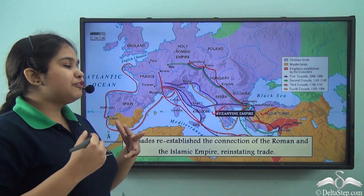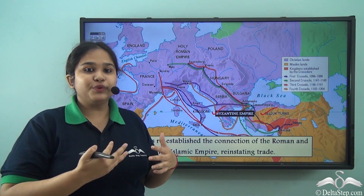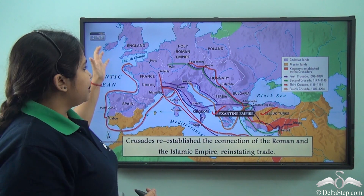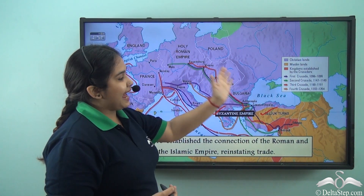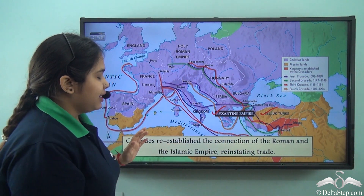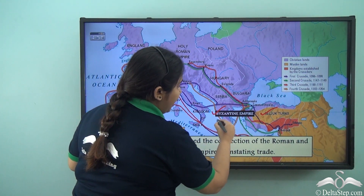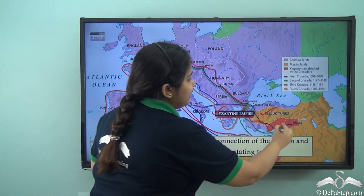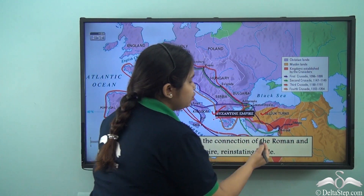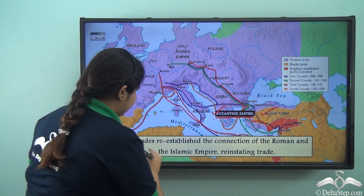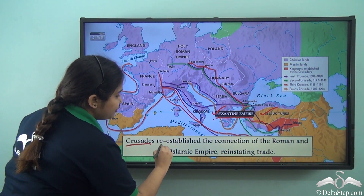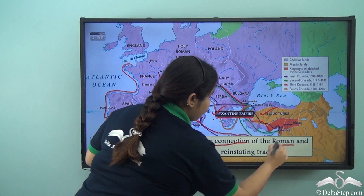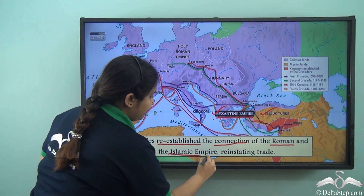After the fall of the Roman Empire around the 4th century, the Western part of the Roman Empire could not gain access to Asian lands for trade, whereas the Eastern part — which included the Byzantine Empire — had easy access, but slowly that also closed down. But after the Crusades, we see a re-establishment of the trade routes; the connections open up between the Romans and the Islamic Empire.